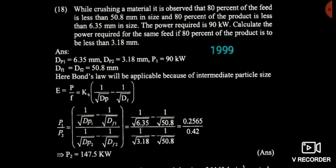In this question there are two cases. In Case 1, feed diameter is 50.8 mm, product diameter is 6.35 mm, and power required is 90 kilowatt. In Case 2, the feed is the same at 50.8 mm but the product diameter is 3.18 mm. Simply write the Bond's equation for Case 1 and Case 2, put in all values, and take the ratio. You don't need to calculate the Kb value — take the ratio of both cases and calculate P2. The answer is 147.5 kilowatt.